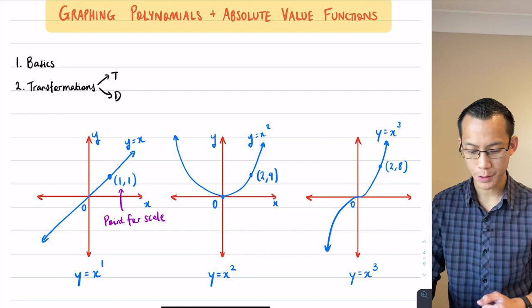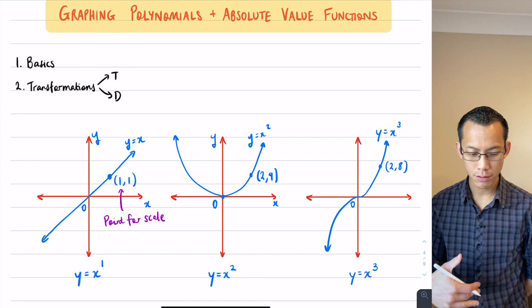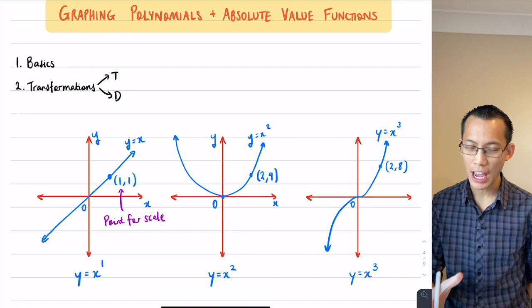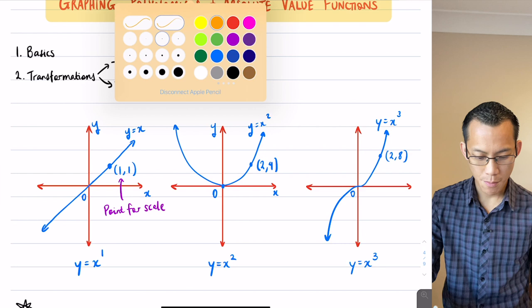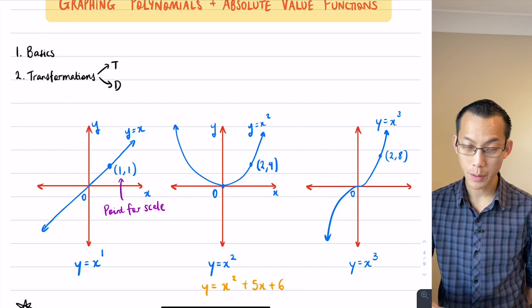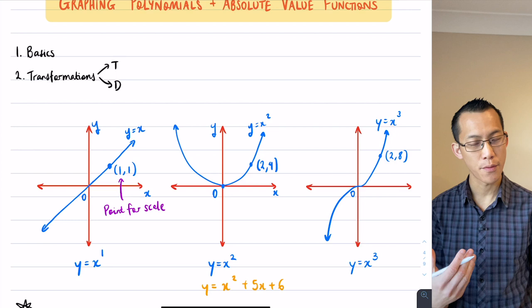Now we started off here with some very simple graphs because what we're going to do is transform these graphs and make them more complicated, see how they result in changes visually. But I do want to point out, of course you will meet polynomials that aren't so simple. You might for example meet something like y = x² + 5x + 6, and in this case what we're going to need to do is some factorization that will help us find the intercepts and if necessary also provide a point for scale.